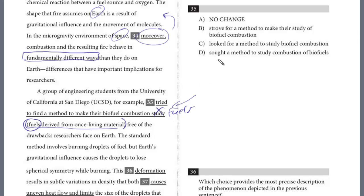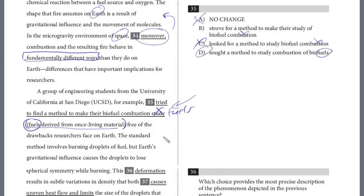This is a good strategy for these types of problems. We know it's not A — it ends with combustion. We want to end with 'fuel' and then describe that fuel. Option B ends with combustion again. Option C ends with combustion. Option D is 'sought a method to study combustion of biofuels' — and then describing those fuels. D is the answer.